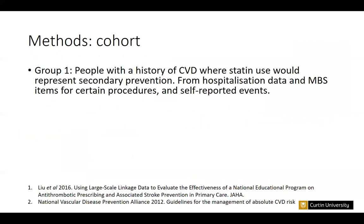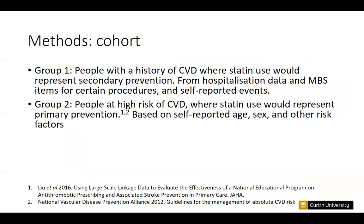Our study cohort is made up of participants with a history of CVD, based on hospitalisation data and Medicare claims for certain out-of-hospital procedures. The cohort also includes people at high risk of CVD, based on age, sex, smoking, hypertension status, and some other risk factors. High risk here means a 15% chance of a CVD event within five years, based on Australian guidelines for the management of absolute CVD risk.